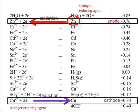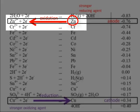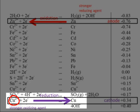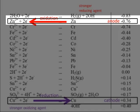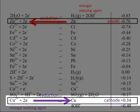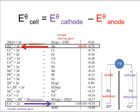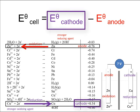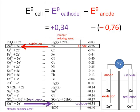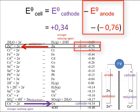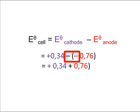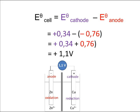In the zinc-copper cell, zinc is oxidized to zinc ions and copper ions are reduced to copper. Because zinc is being oxidized, it is the anode; because copper ions are being reduced, that happens at the cathode. Using the formula, the standard electrode potential of the cell equals the standard electrode potential of the cathode, which is +0.34, minus the standard electrode potential of the anode, which is −0.76. Be careful — minus minus gives a double negative, making a positive. So that's 0.34 plus 0.76, giving the standard electrode potential of the cell as a whole.